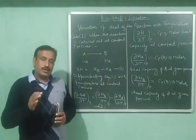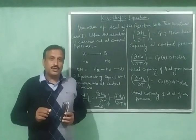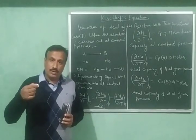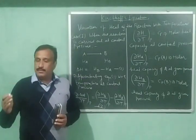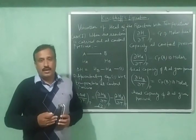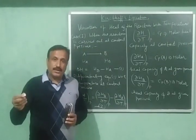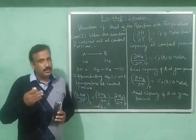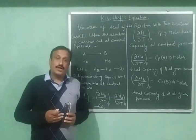Heat of a chemical reaction varies with temperature. If the same chemical reaction is carried out at two different temperatures, then the heat of the reaction will be different. By heat of the reaction we mean heat evolved or absorbed during a chemical reaction. Suppose a reaction is carried out at temperature T1 and the heat of that reaction is delta H1, and the same reaction carried out at T2 gives delta H2. This is the variation of heat of reaction with temperature, studied by Kirchhoff, so the equation derived is called Kirchhoff's equation.